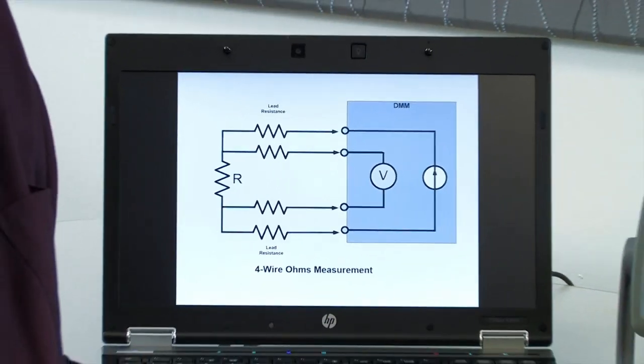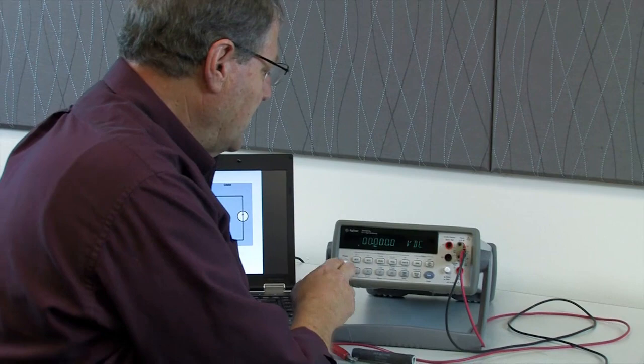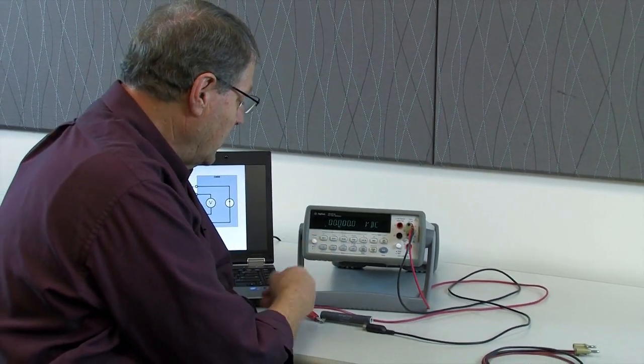So let me show you how that works in reality. What I have here is a 34401A. It's an Agilent voltmeter, the most popular voltmeter that Agilent ever introduced or even today makes.